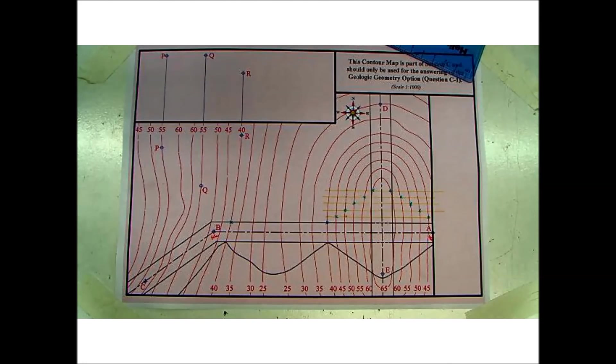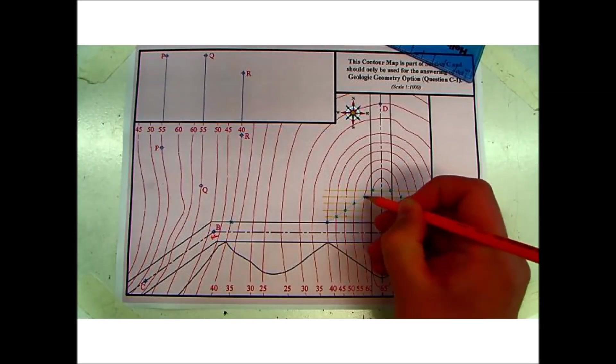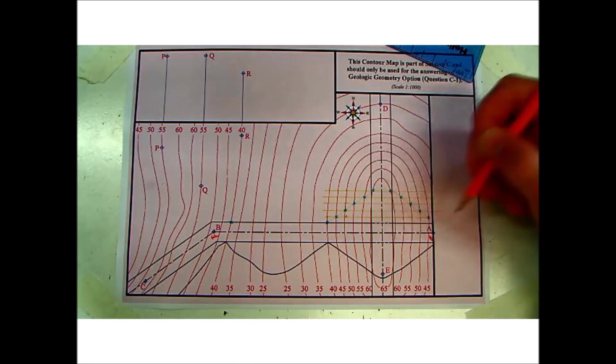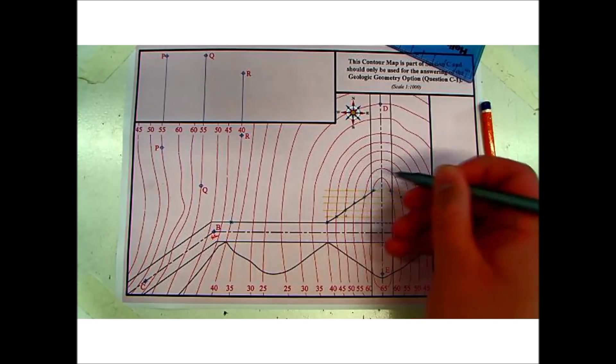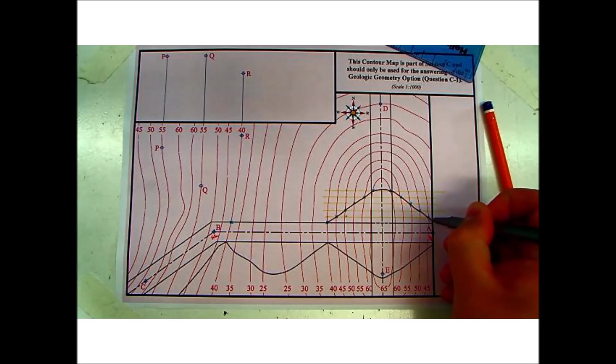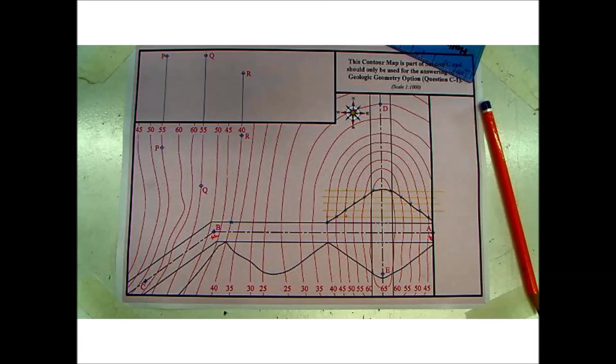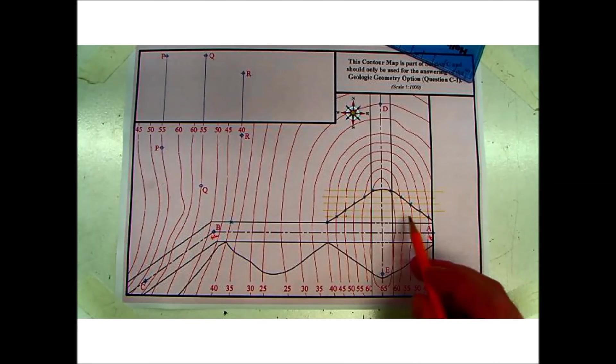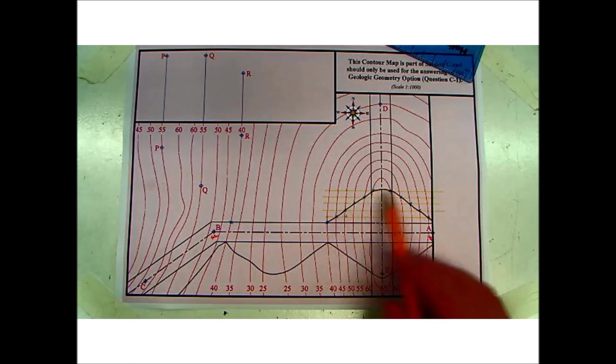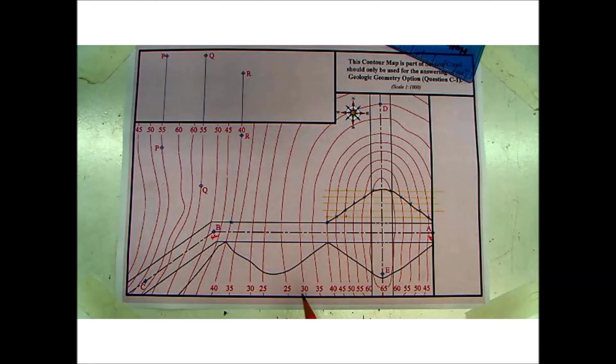So that can be drawn in freehand lightly and then you can go over it strong. So that is one part done. So the road is at 40 meters, and then you have to cut into the contours, into the land there to find out those heights.